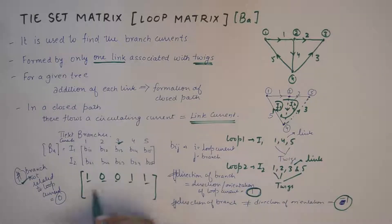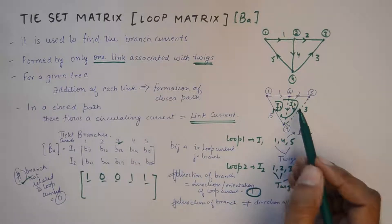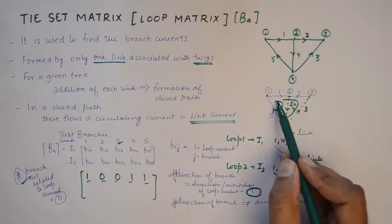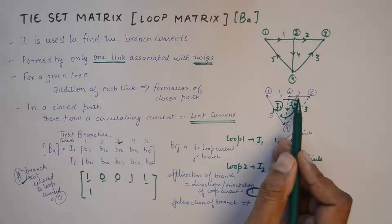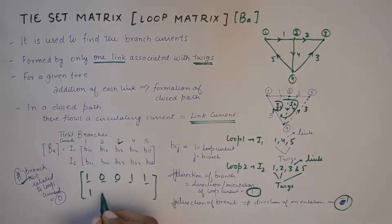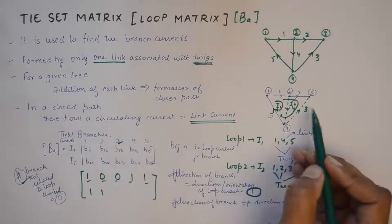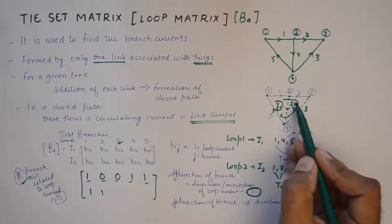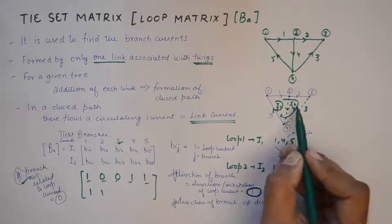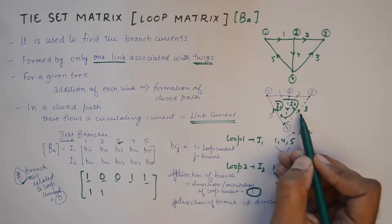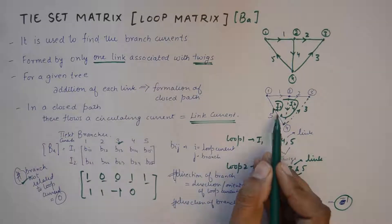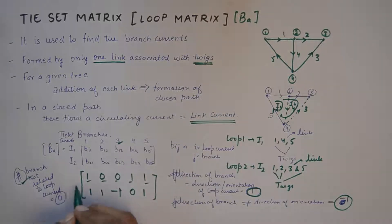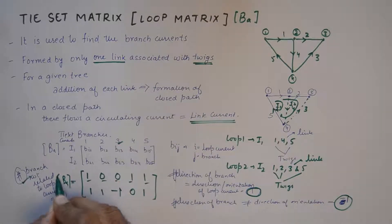For the second row, B21 refers to branch 1 and loop current 2 — they are in the same direction, so I put a 1. Branch 2's direction is the same as loop current 2, so I put a 1. Branch 3's direction is opposite to loop current I2 — I2 is flowing clockwise and branch 3 is flowing anticlockwise — so I put a minus 1. Branch 4 is not related to loop current 2, so a 0. Branch 5 is in the same direction as I2, so a 1.